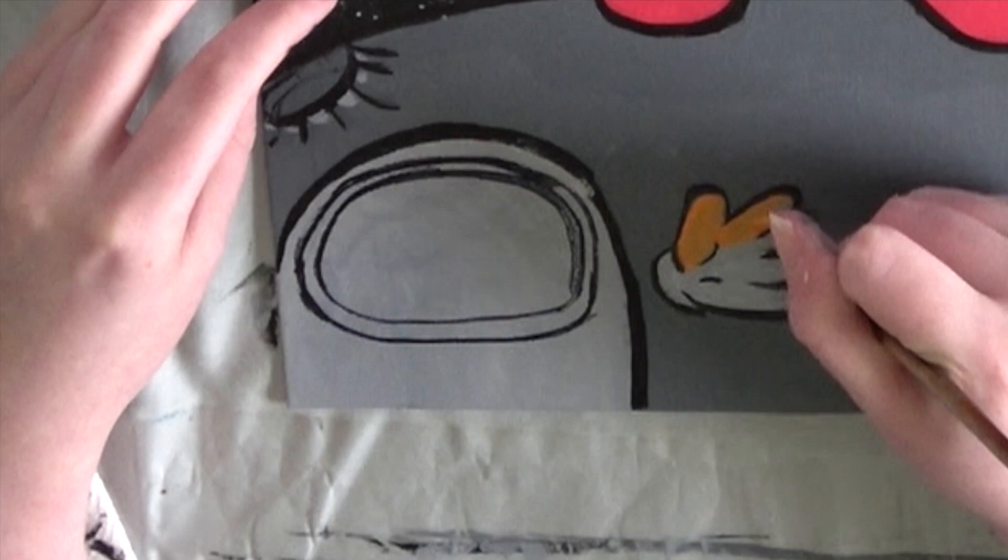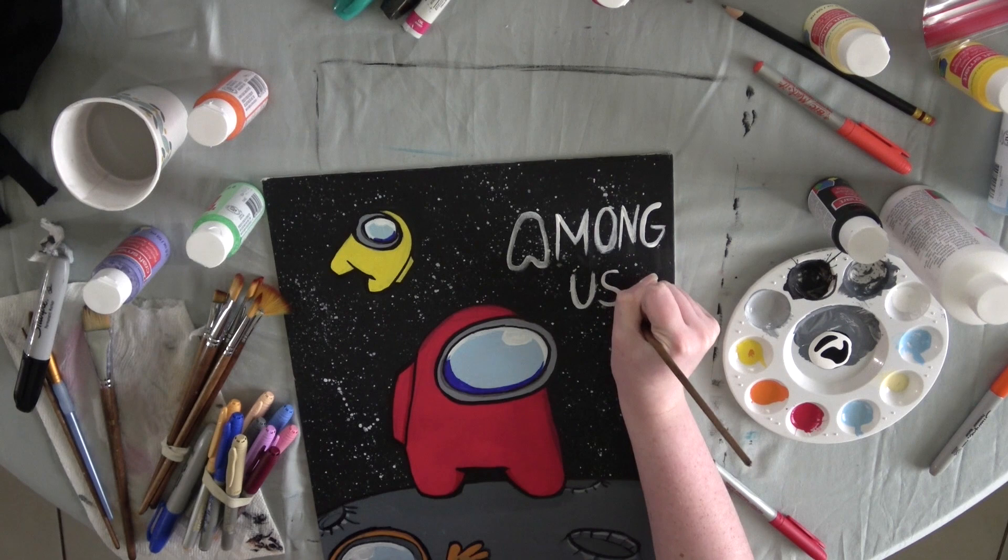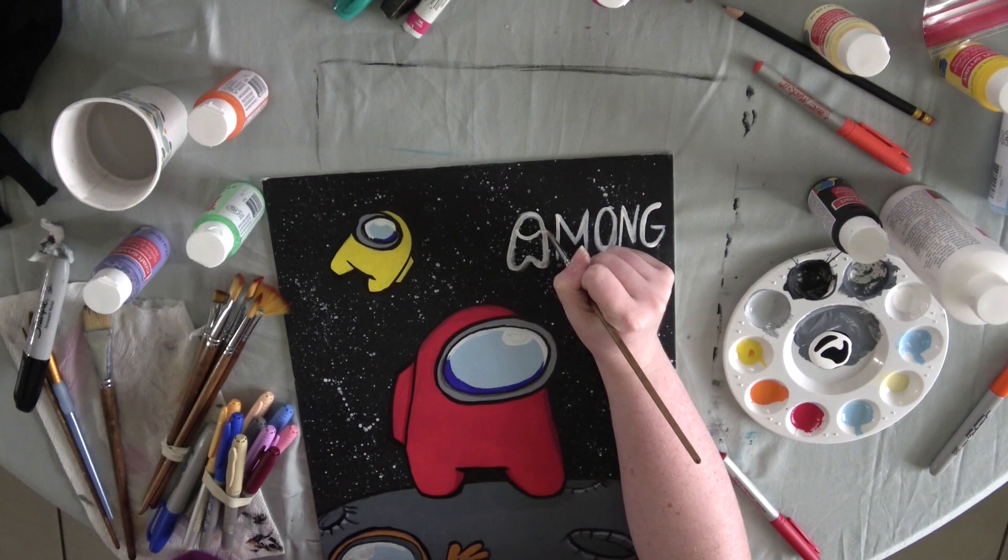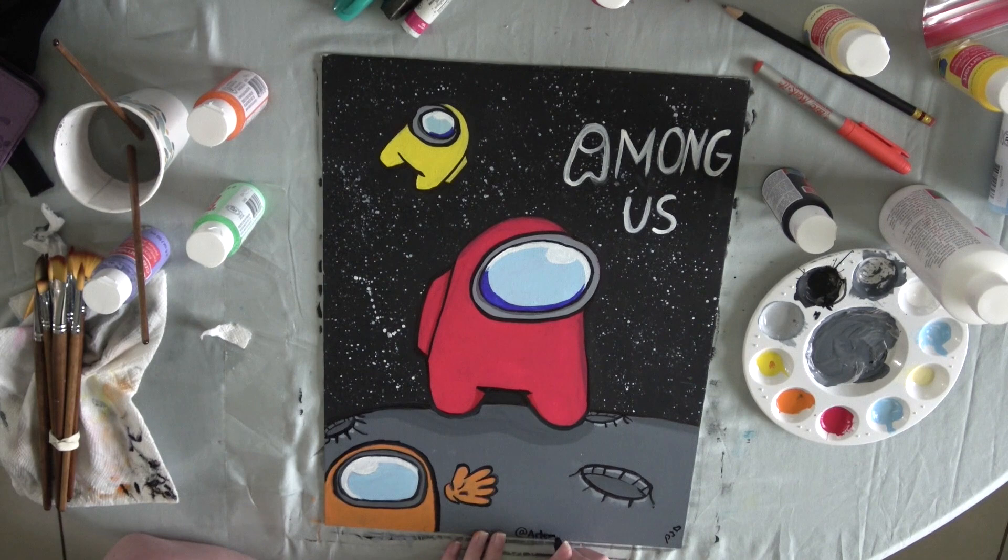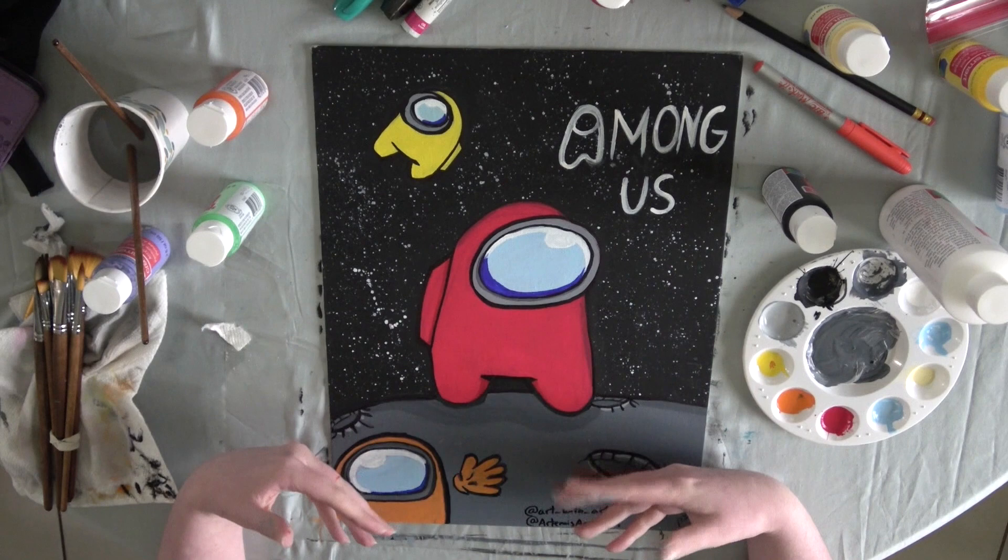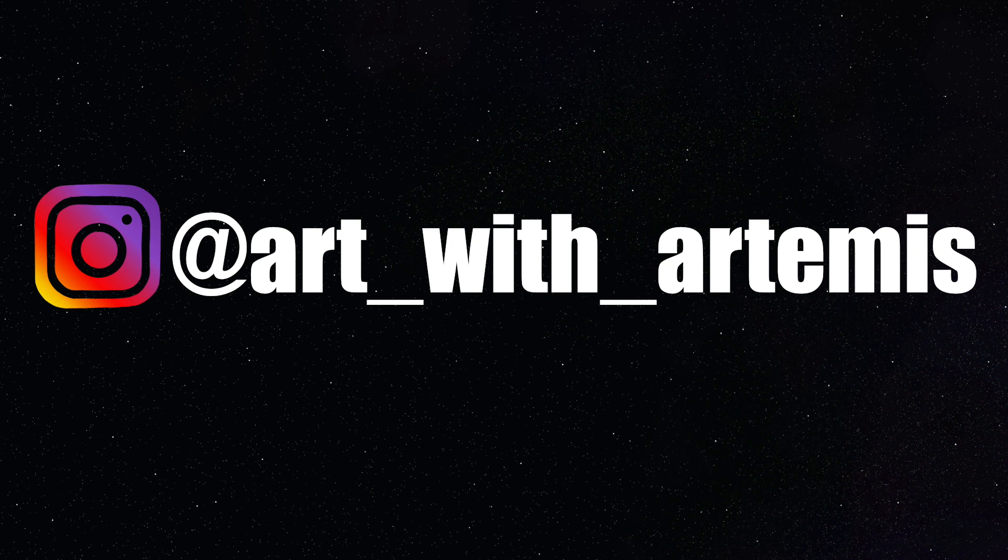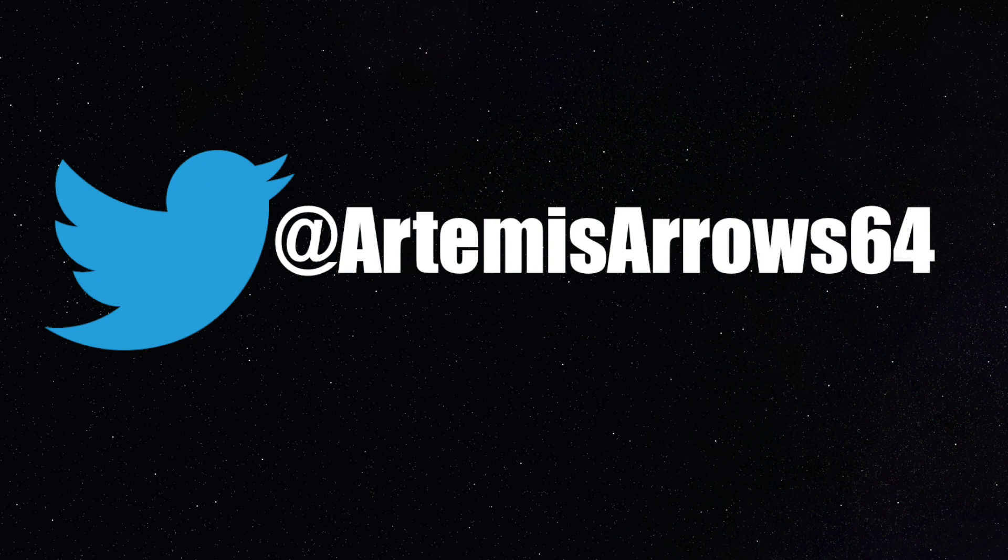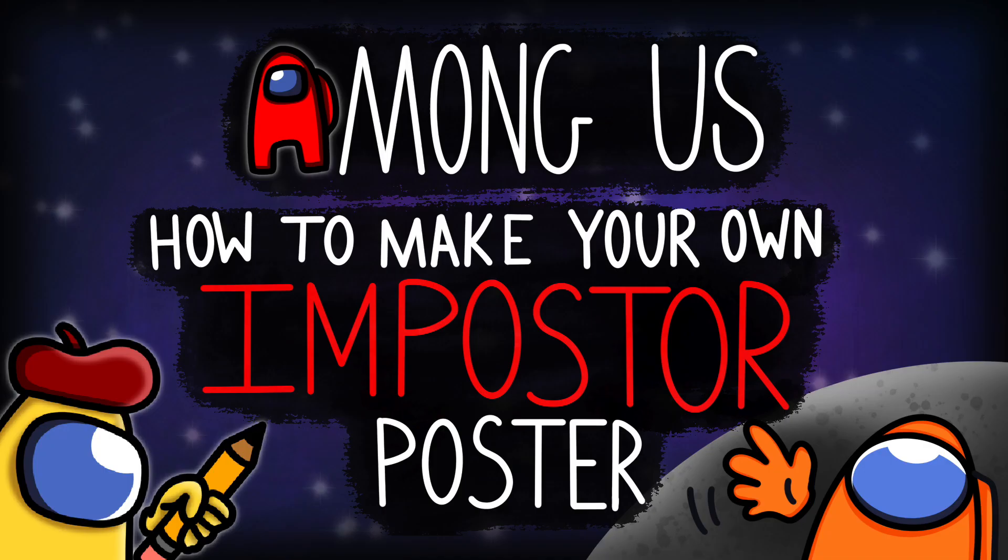Once I finish, I add in the title Among Us, and I even make the A have the little character in it. Also don't forget to sign your name when you finish your drawing or your painting. Now we're pretty much done with this drawing. Thank you very much for watching this video. If you want to see more art tutorials or more how to draws, feel free to like, comment, and subscribe down below. And don't forget to hit the notification bell for more. If you want to help support me on other social medias, feel free to follow me on Instagram at ArtWithArtemis, and you can follow me on Twitter at ArtemisArrow64. Anyways, thank you all once again. Until next time, see ya!